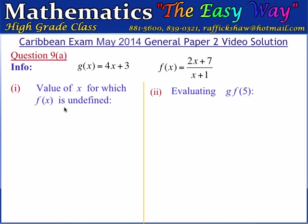The first part wants us to find the value of x for which f of x is undefined. f of x is a rational function — that is, a function divided by another function. A rational function will become undefined when the function in the denominator becomes equal to 0, because we cannot divide by 0. A number divided by 0 is undefined, so this rational function f of x will become undefined when the expression in the denominator becomes equal to 0.